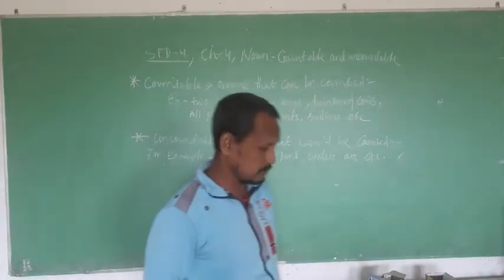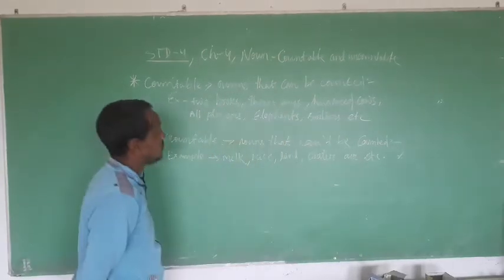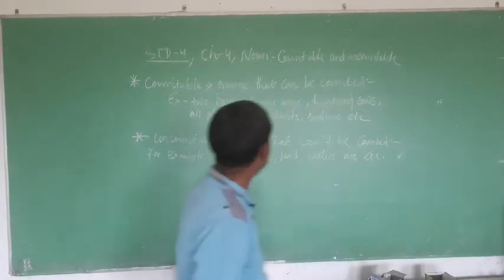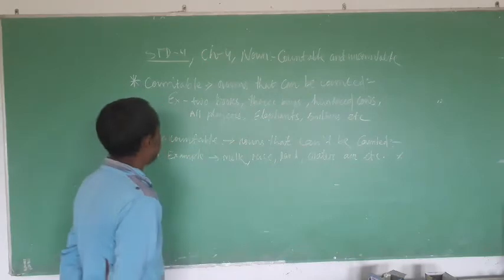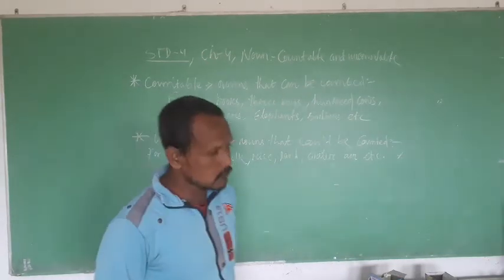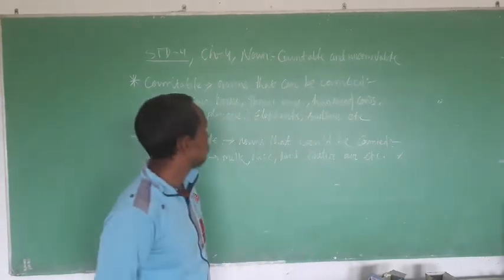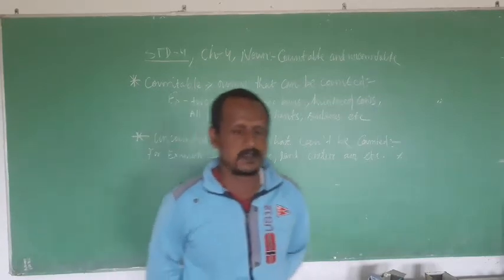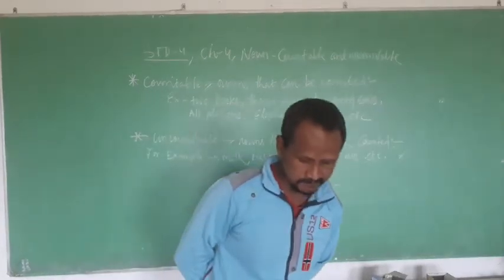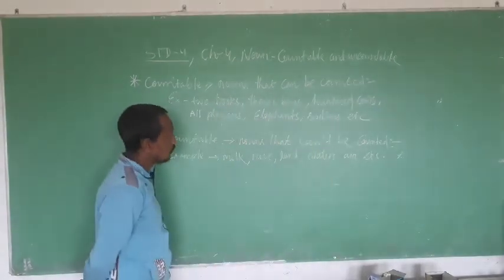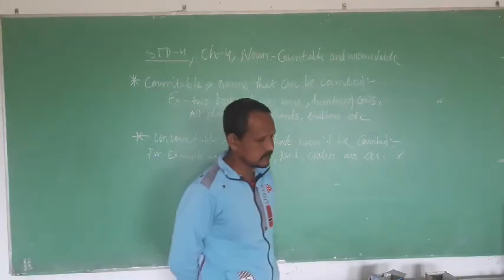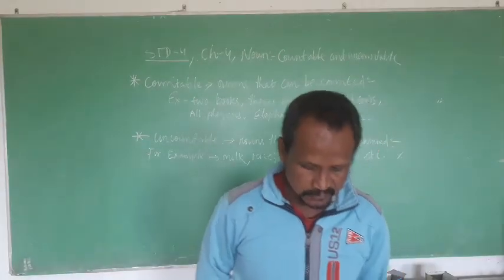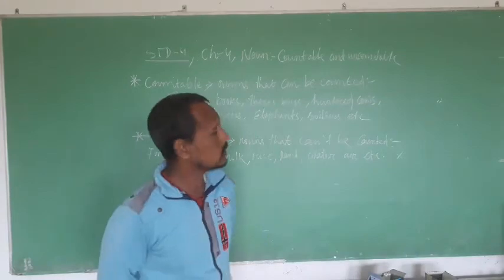Countable Noun means the nouns that can be counted are called Countable Noun. For example, 2 books, 3 boys, 100 cows, all players, elephants, boys, soldiers, armies — these are called Countable Noun.